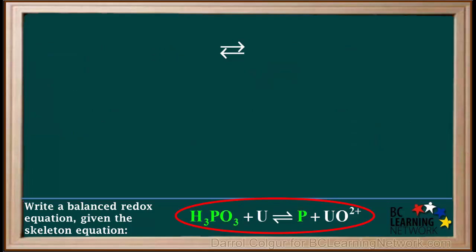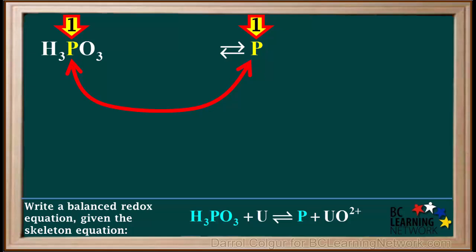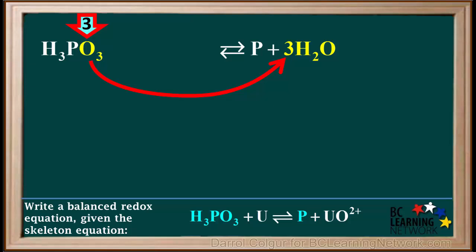We start by splitting the equation into two half-reactions. The first one will be H3PO3 producing P. We'll balance this half-reaction now. We'll start by balancing phosphorus atoms. We see there is one P on both sides, so phosphorus is already balanced. Now we'll move on to oxygen. There are three O's on the left and none on the right, so we'll add three water molecules to the right side. We now have three O's on both sides, so oxygen is balanced.